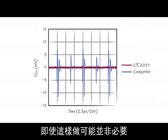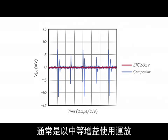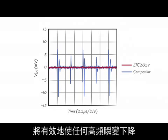Doing so may not even be necessary, however, as it is common to use the op-amp in moderate gain when measuring small signals. The closed-loop bandwidth of the circuit will effectively roll off any high-frequency transients.